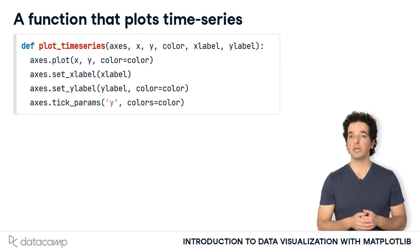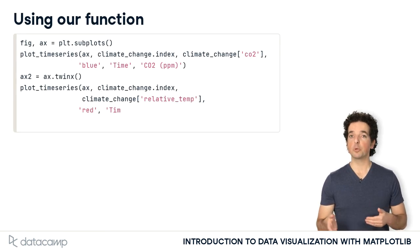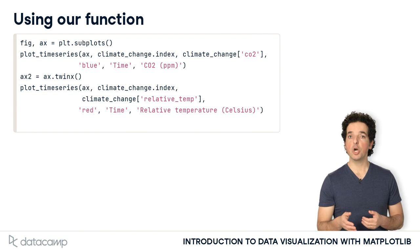The function calls the methods of the axis object that we have seen before: plot, set_x_label, set_y_label, and tick_params. Using our function, we don't have to repeat these calls and the code is simpler.